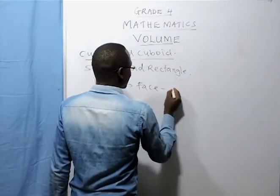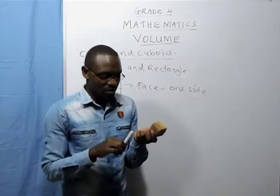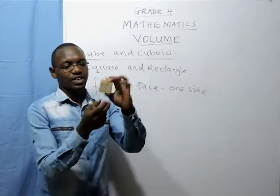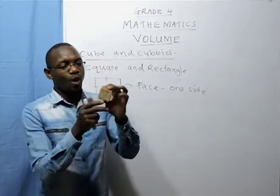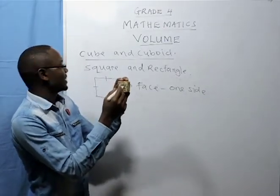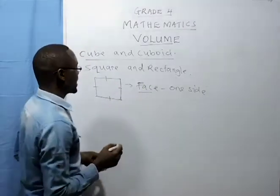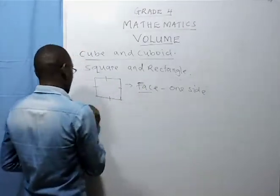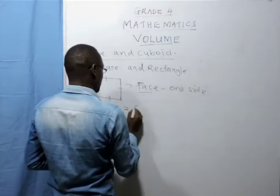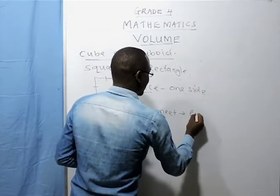One side of a cube is called a face. For example, with me here I have a cube. This is a cube. One face of the cube — this side — is what we are calling a face. It's called a face. One side of the cube is called a face. And we say where two faces meet, we call that one an edge.